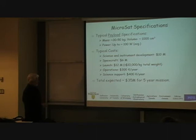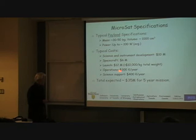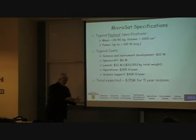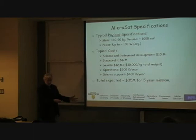You also have to spend about 300 to 500,000 per year for operations. And if you need science support, you have people who will take the data and do something with it — scientists will apply for funds to process the data, and those funds have to be part of the budget.